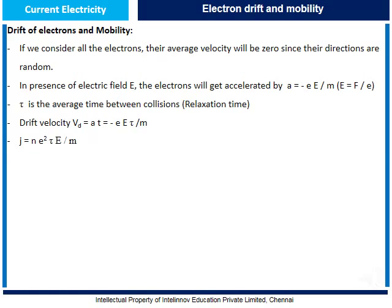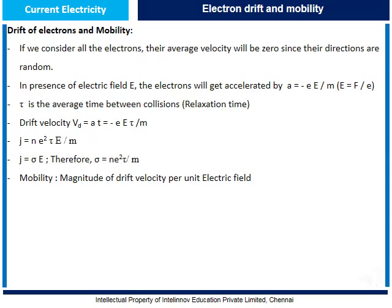Since current density equals sigma E, conductivity can be written as Ne² tau by m. Now let us understand mobility. Mobility is the magnitude of drift velocity per unit electric field, represented by mu. So mu equals Vd by E. Substituting Vd equal to eE tau by m, we get mobility equal to e tau by m.